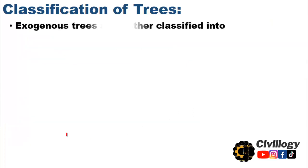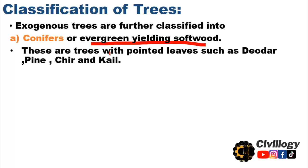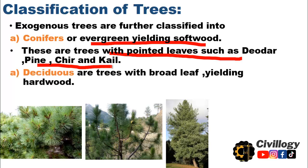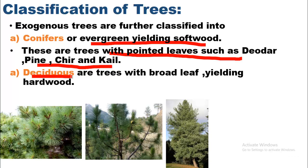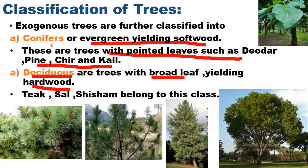Exogenous trees are further divided into conifers and deciduous trees. Conifers are evergreen plants yielding softwood, with pointed leaves — examples include deodar, pine, chir, and kail. Deciduous trees have broad leaves and are called hardwood. The main difference between hardwood and softwood is that trees with pointed leaves are called softwood, and trees with broad leaves are called hardwood.